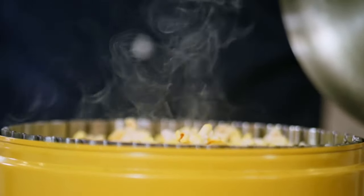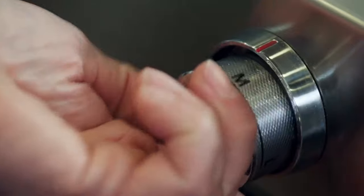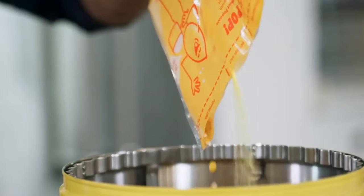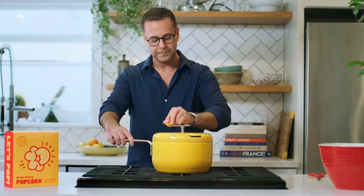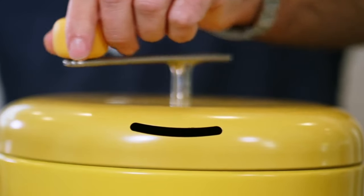It's super easy to use. Set the Popsmith on medium heat, pour in your oil, your corn, your salt, close the lid, turn the crank. When the popcorn popping slows down, take it off, pour it into a bowl, and enjoy.